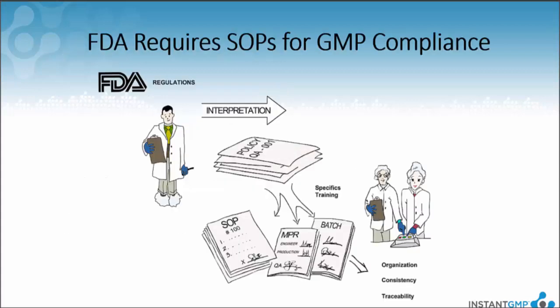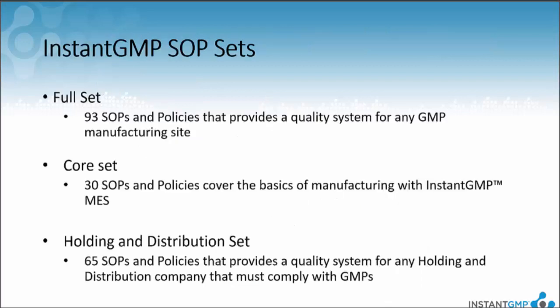If you are regulated by the FDA, or believe your industry is to be added to regulatory oversight, then the FDA has guidelines that need to be followed to ensure the product is safe for the consumer. These regulations are broad in their terminology, so it is up to individual sites to interpret their meaning. These interpretations lead to standard operating procedures, or SOPs. Without SOPs, the FDA will not view you as GMP compliant and may prohibit the distribution of your product.